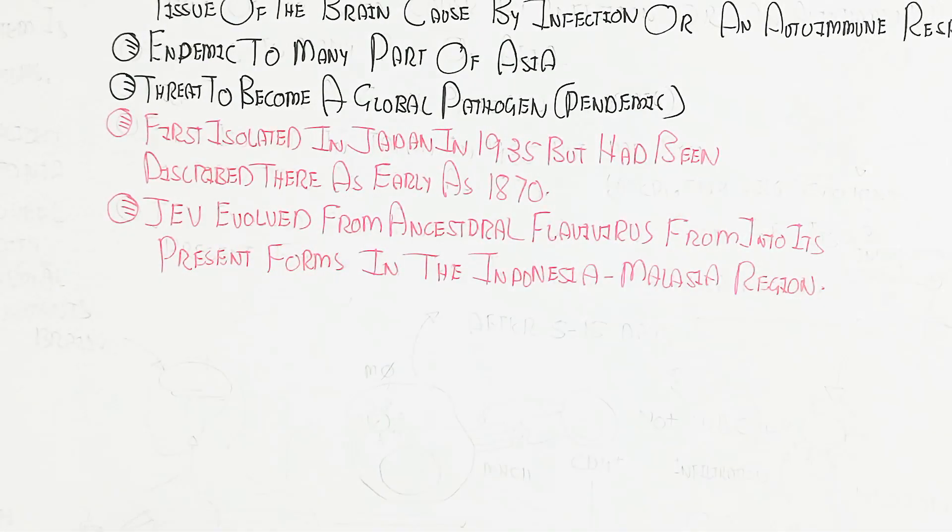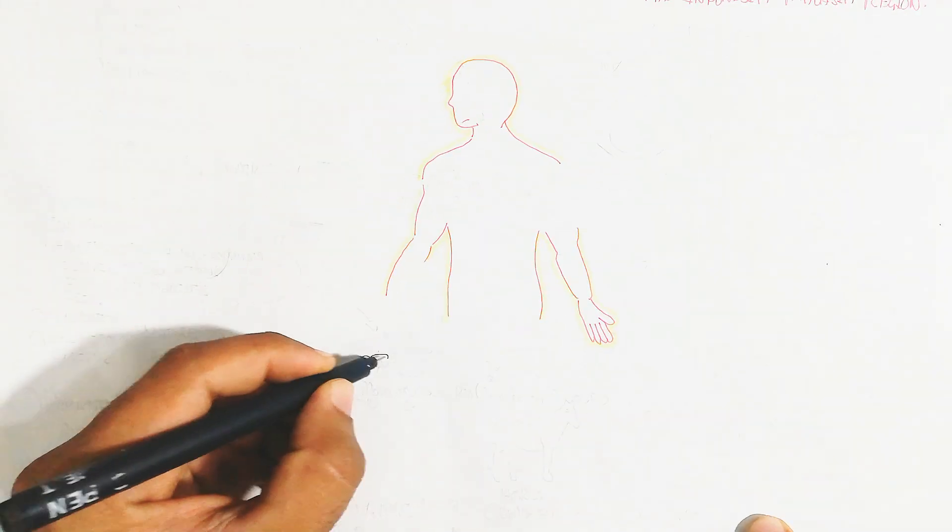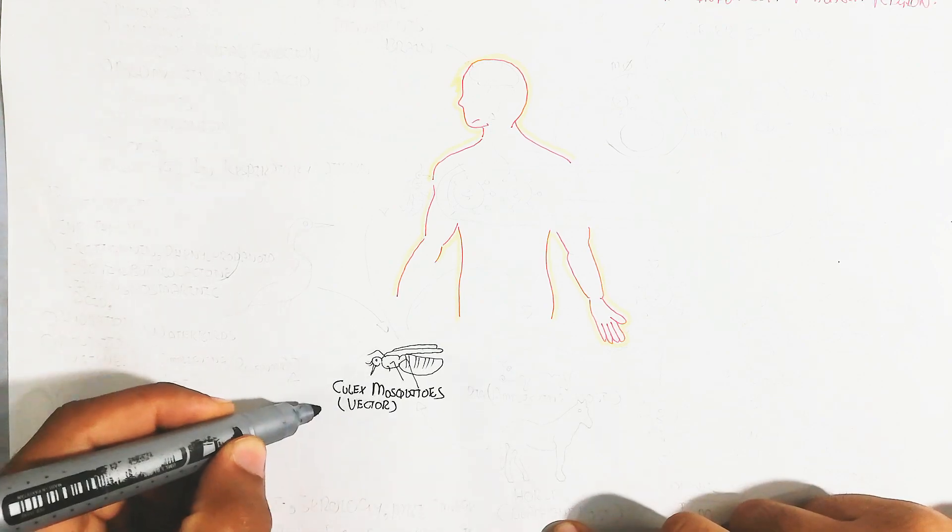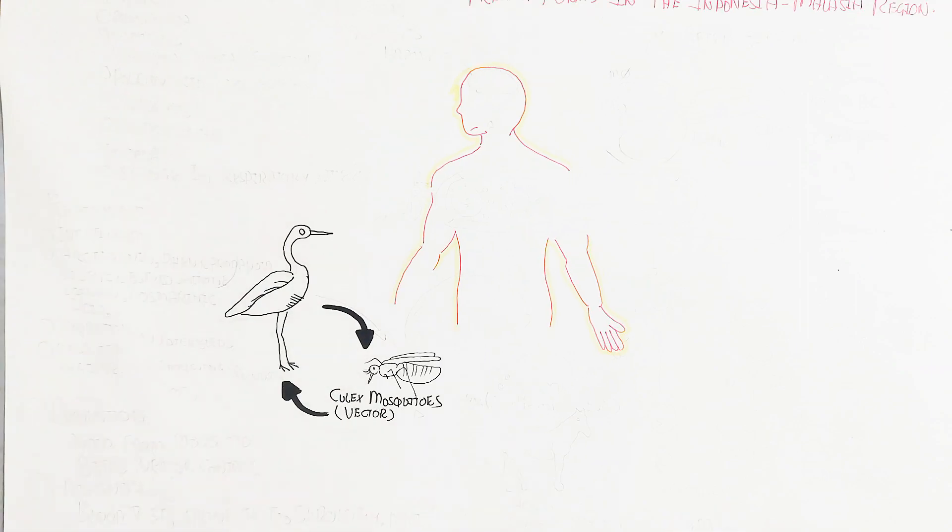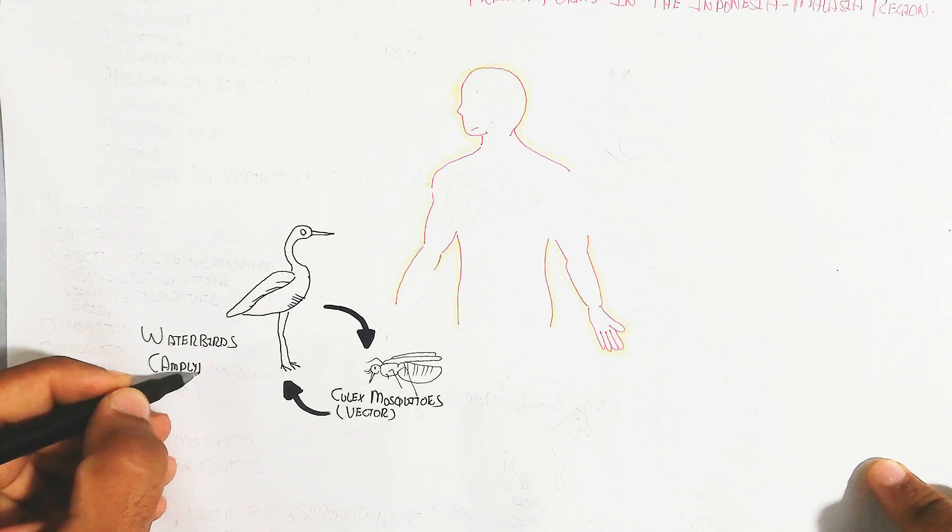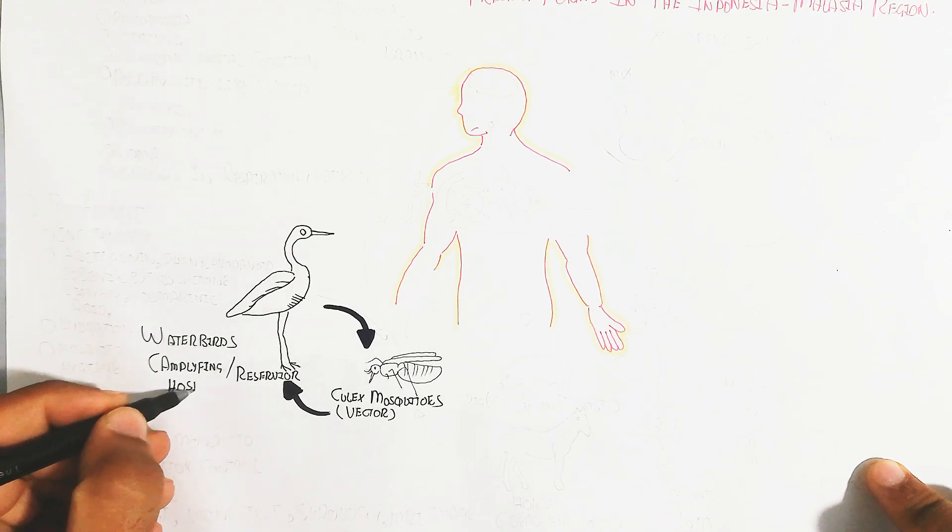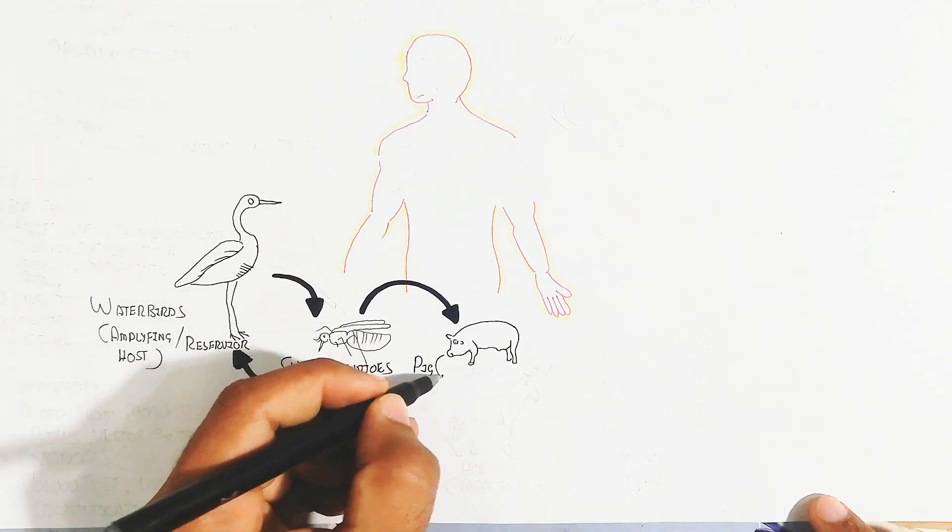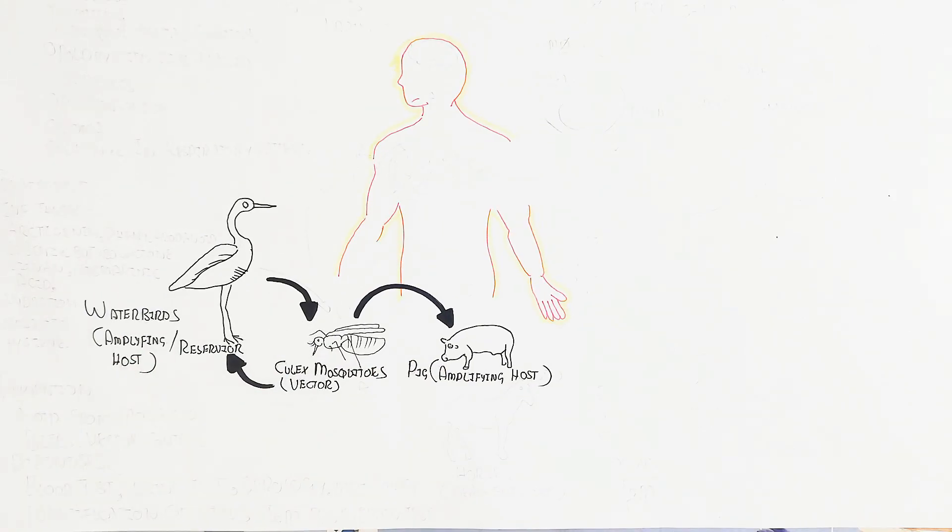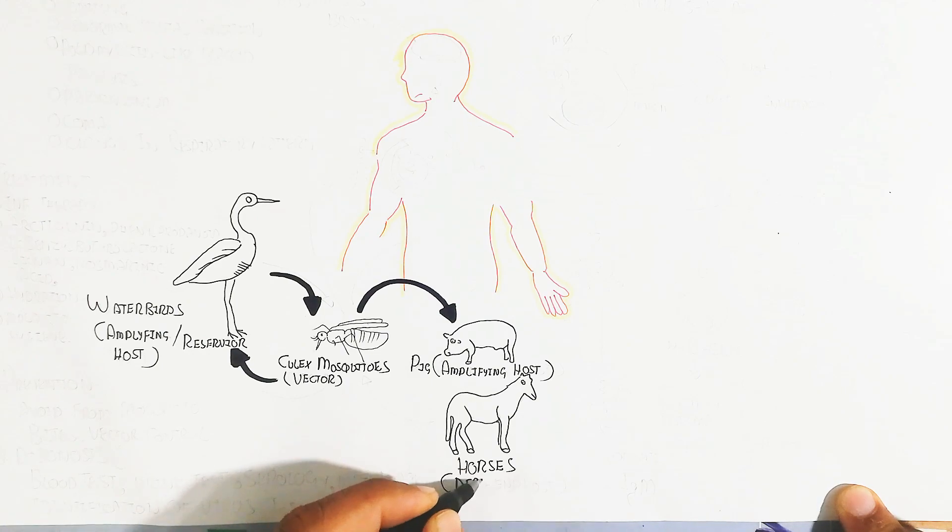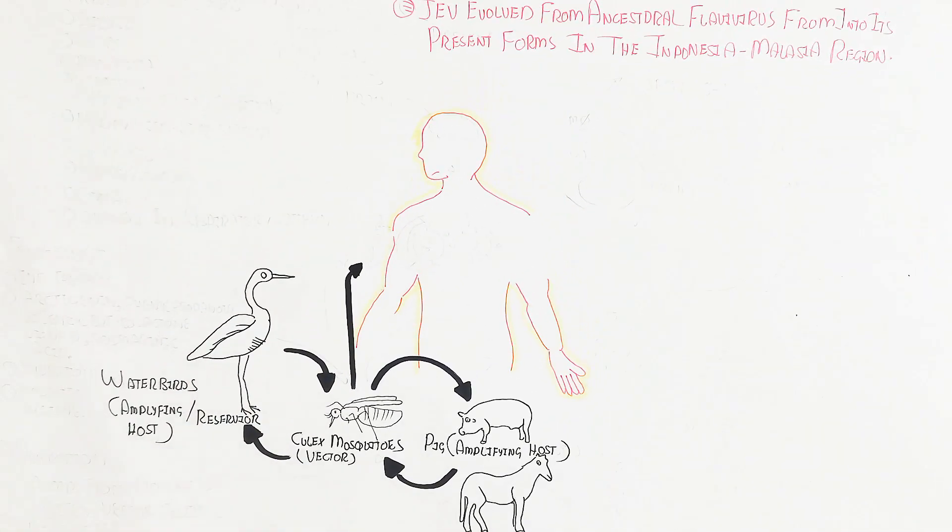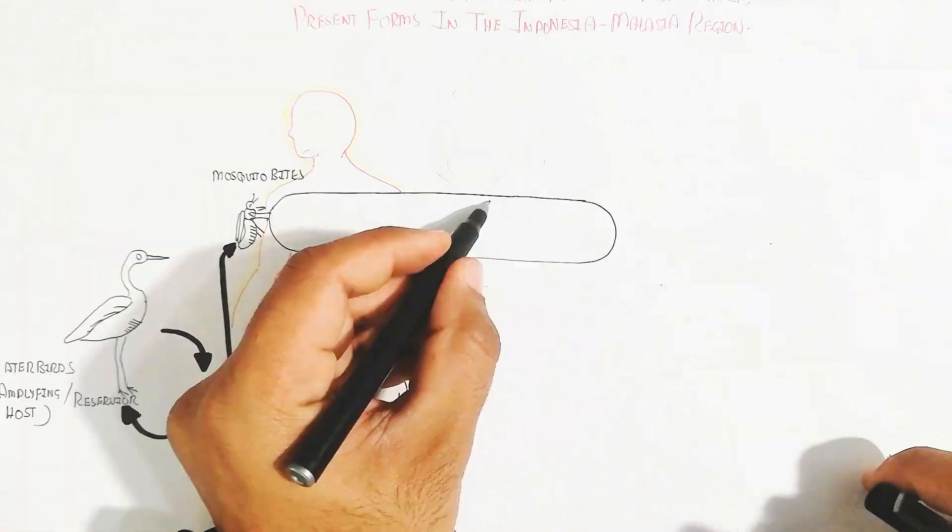Let's understand the pathophysiological mechanism and transmission. A vector is required for infection to the human body—Culex mosquitoes are the vector. This is a zoonotic virus requiring multiple hosts. Water birds are the amplifying reservoir host. After biting, the mosquito transmits infection to amplifying hosts like pigs. Horses are dead-end hosts, not amplifying.